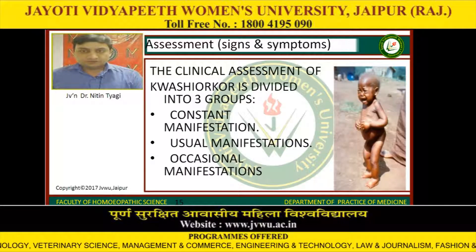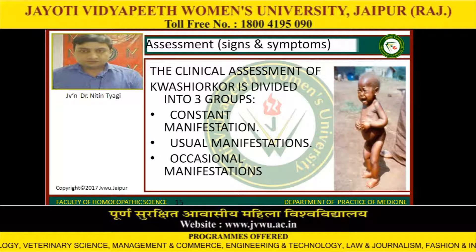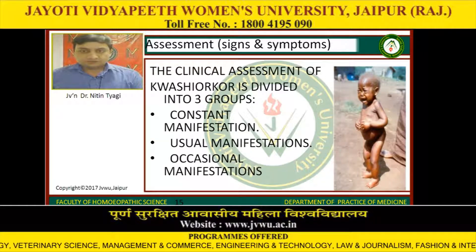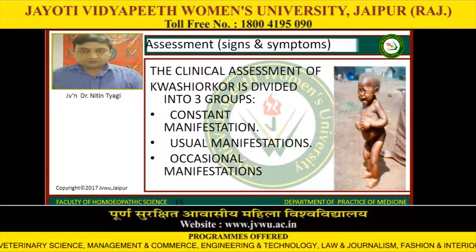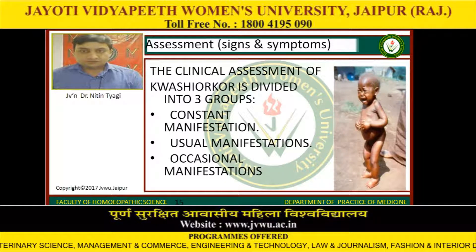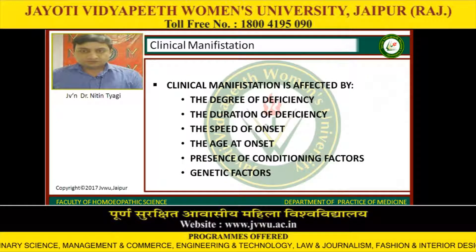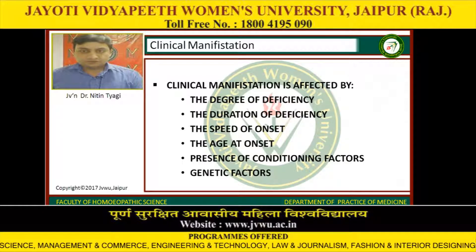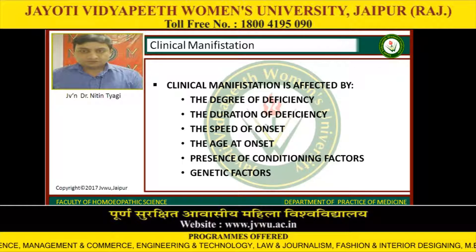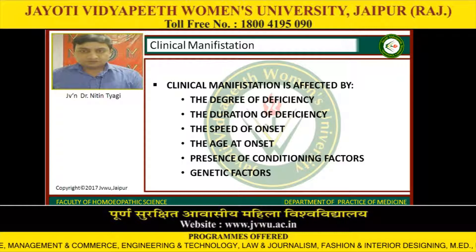The assessment: signs and symptoms. The clinical assessment of kwashiorkor is divided into three groups — the constant manifestations, the usual manifestations and occasional manifestations. Clinical manifestations are affected by the degree of deficiency, the duration of deficiency, the speed of onset, the age of onset, the presence of conditioning factors, and genetic factors.